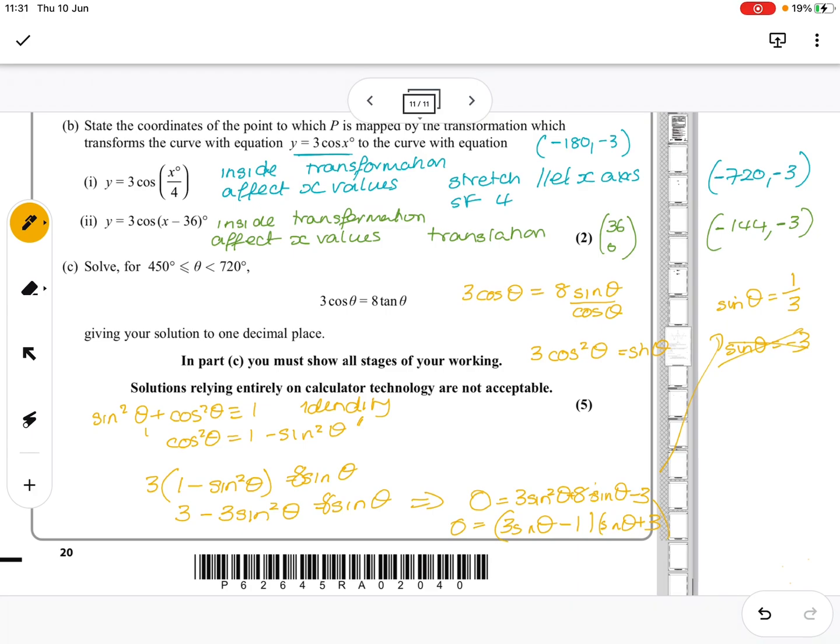Inverse sine of 1 over 3 gives me an answer of 19.47. Now, that is lovely. However, we want the answer between that range. So you need to then think about your sine graph. That's 360. I'm not going to fit it all in, am I? Let's find somewhere else.